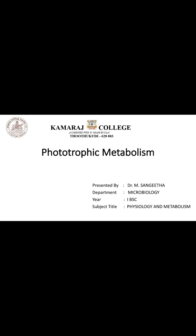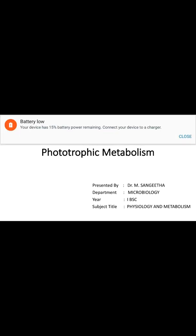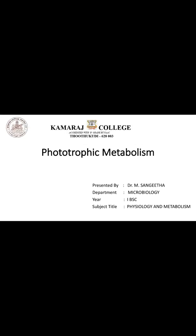This is the phototrophic metabolism theme. What happens in phototrophic metabolism is the proton gradient. What does proton gradient mean? Outside, water (H₂O) is broken by proton energy, pulled into the inside, and speeds up the electron transport chain within the cell. Because of the electron transport chain, energy is produced.